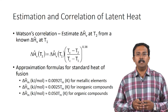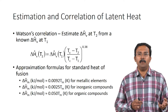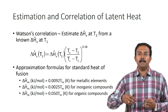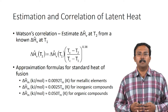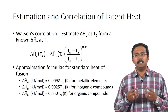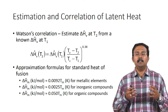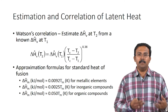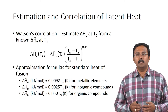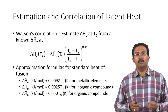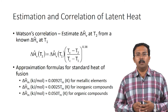Watson's correlation is used for estimating the heat of vaporization at a temperature different from the temperature for which you already have the heat of vaporization. If you have ΔHv at temperature T1, you can calculate it at a different temperature using Watson's correlation. You would also need to know the critical temperature of the component involved.